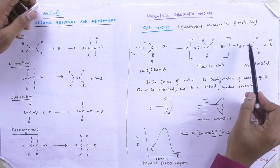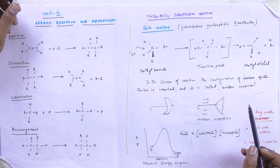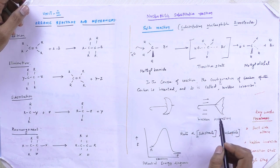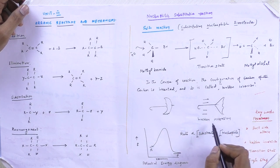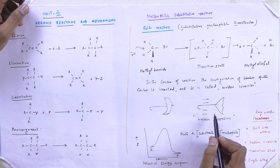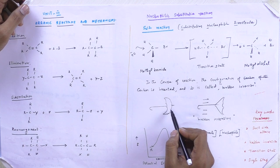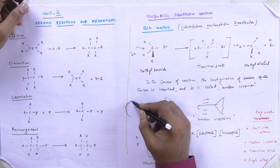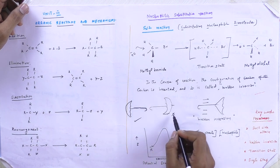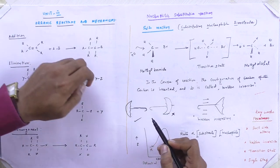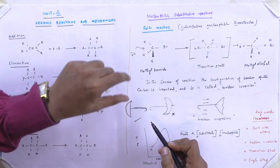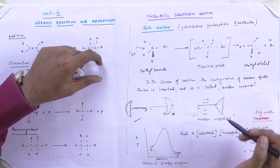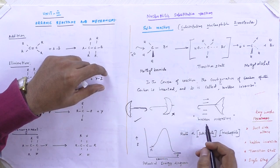During the course of the SN2 reaction, the configuration of the carbon atom is inverted, and it is called Walden inversion. A classical example to compare is an umbrella — when air blows on the bottom side of an umbrella, it resembles Walden inversion. You can compare the structure of the umbrella to the structure of the compound — the compound structure is similar to the umbrella. This is a classical example of the SN2 reaction.